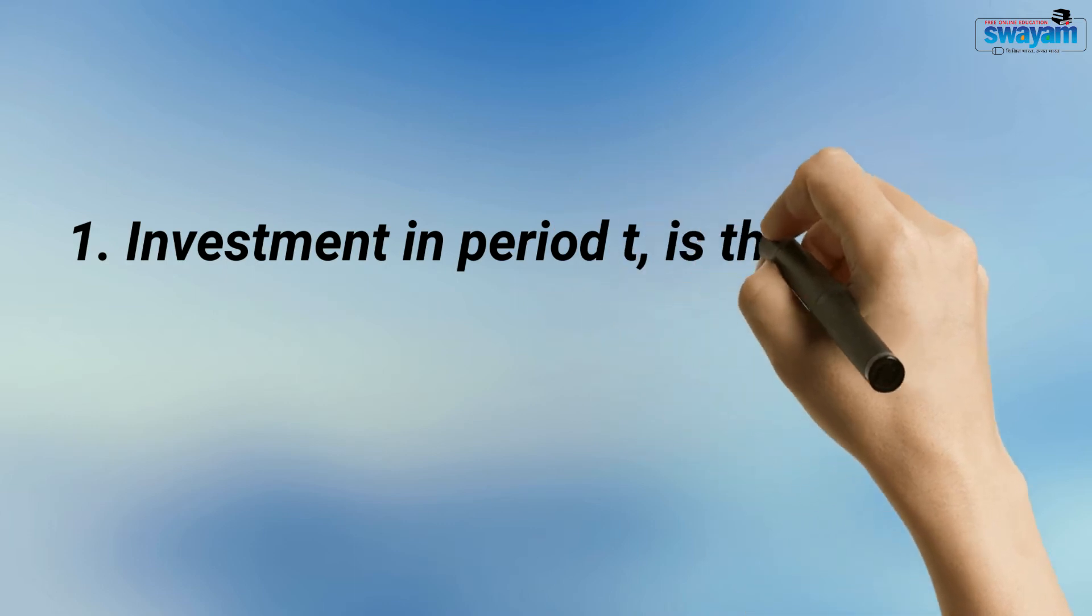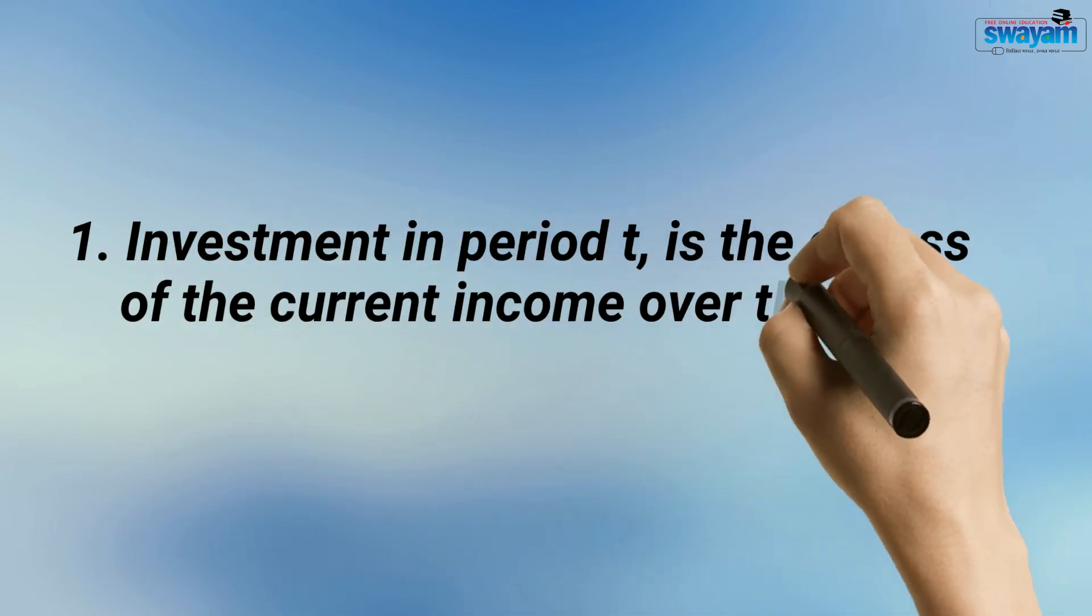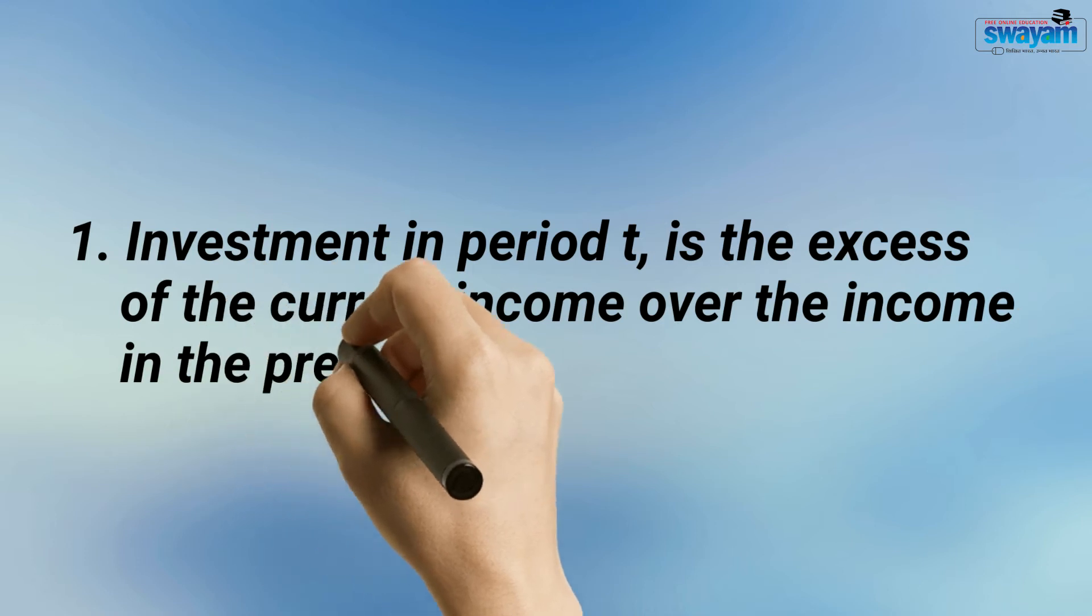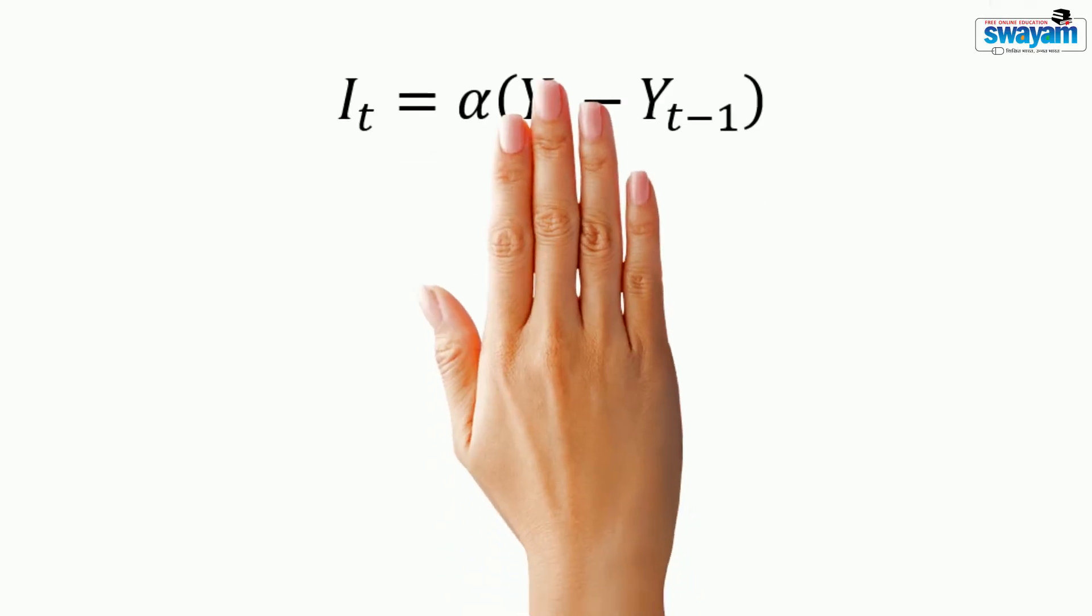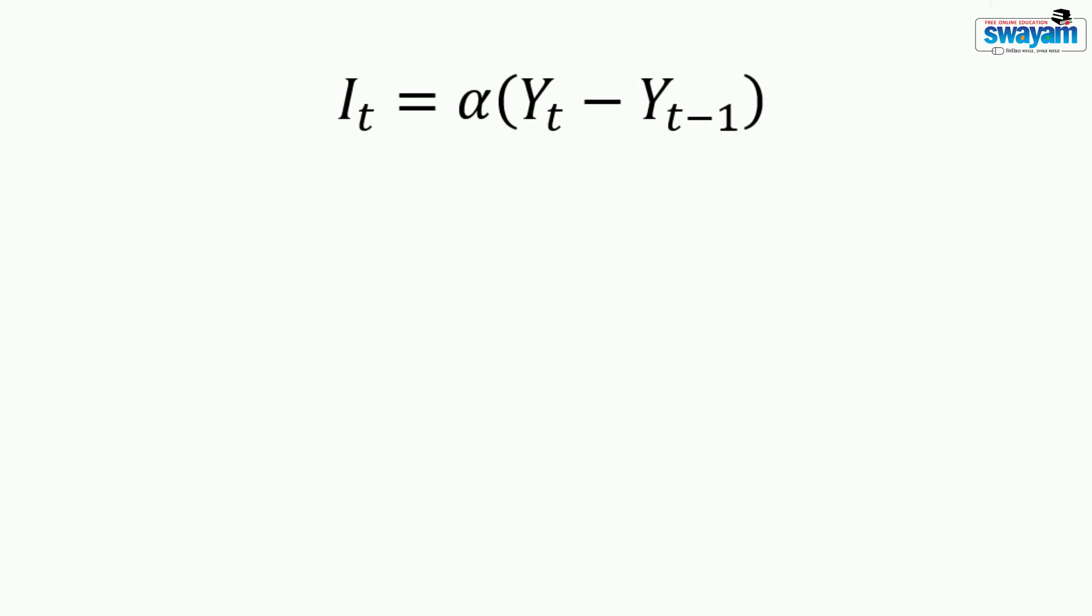The first assumption says that investment in period T is the excess of the current income over the income in the previous period. Can you express this assumption mathematically? This expression shows that investment in period T is the excess of the current income over the income in the previous period.